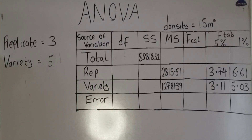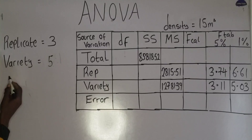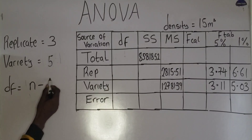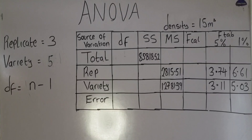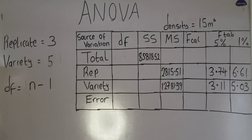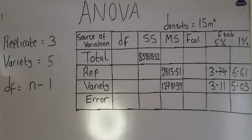Now, let's start with the column of degree of freedom. Don't forget that in our previous class, I told you that the degree of freedom is given by the formula DF = N − 1. To get the total degree of freedom, we have to first know the total number of observations.